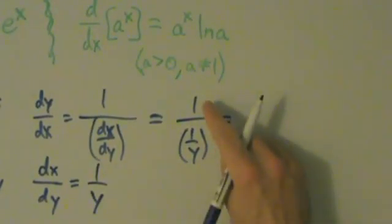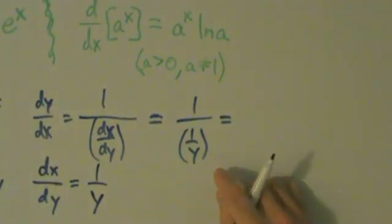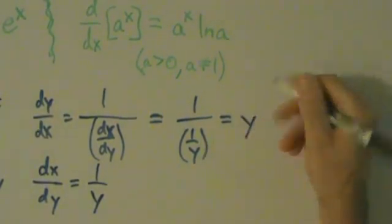So this is 1 over 1 over y. Now if you have 1 divided by 1 over y, then, you know, take the reciprocal, multiply it, so you're basically just saying y.